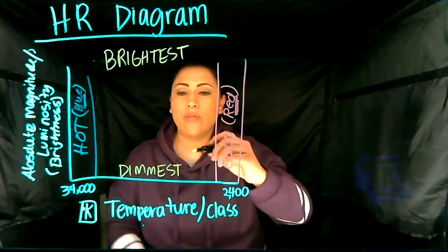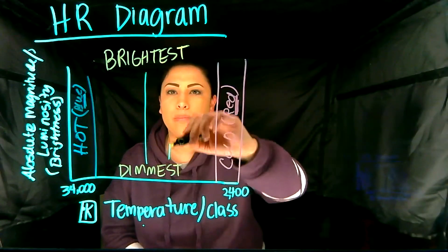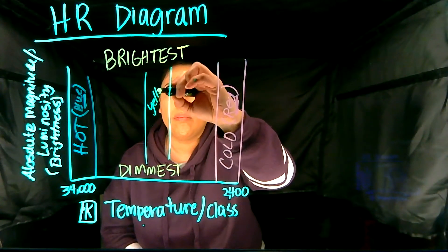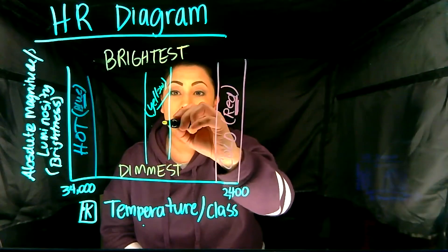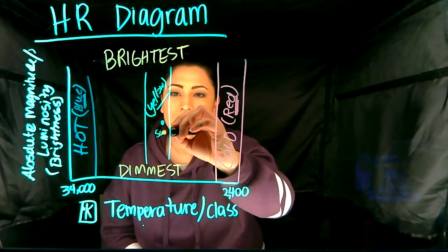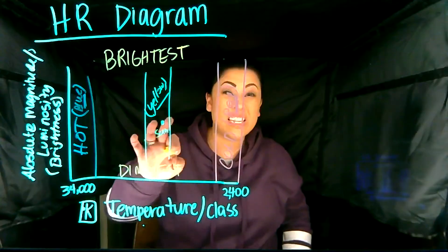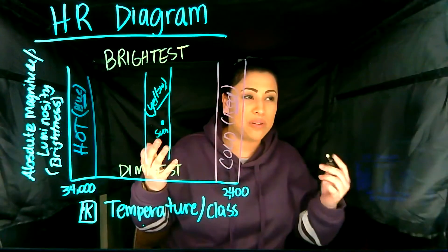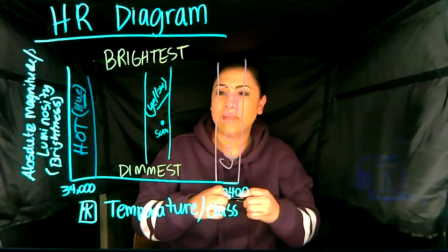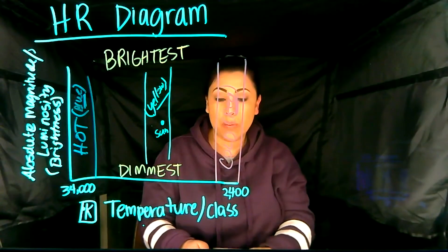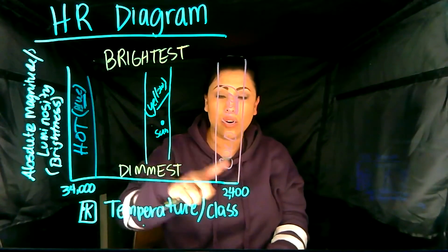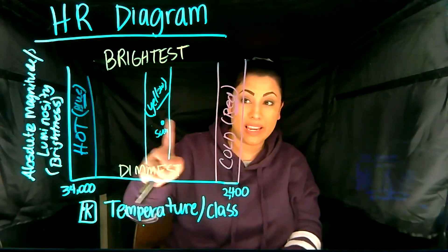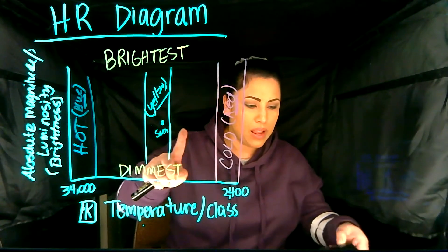Towards the middle, maybe off to the right a little bit, these are going to be yellow — they're medium stars. Our Sun, just to give you an idea, is going to be right in the middle because it's an average star. It's in the middle of its lifecycle — you could say it's kind of middle-aged. So this is the HR diagram: anytime a star is on here, we'll know how hot or cold it is and kind of where it is in the life cycle.